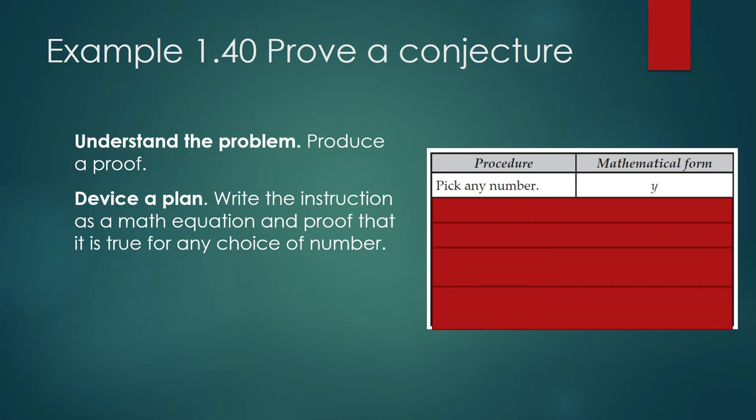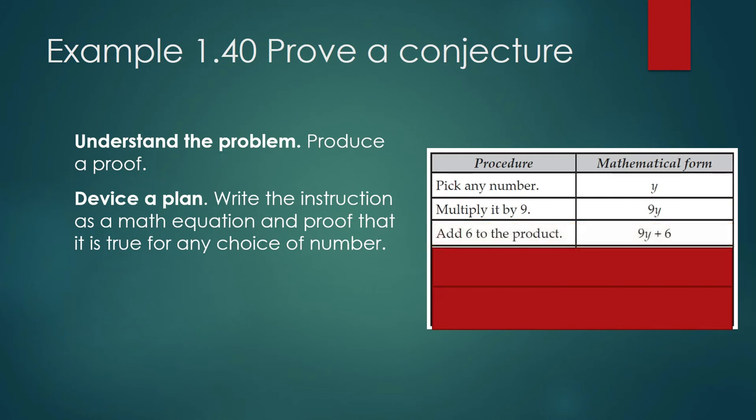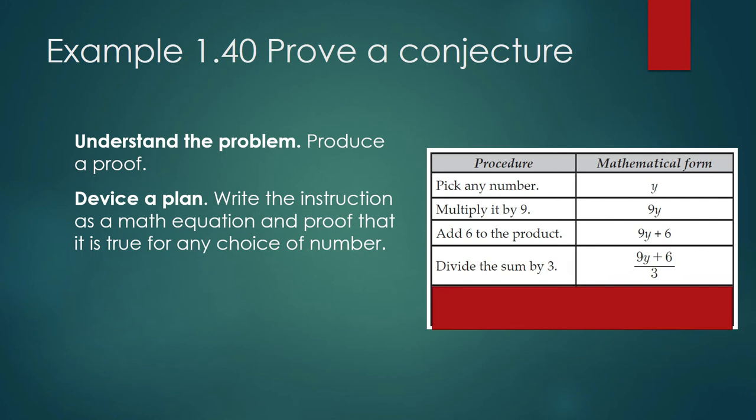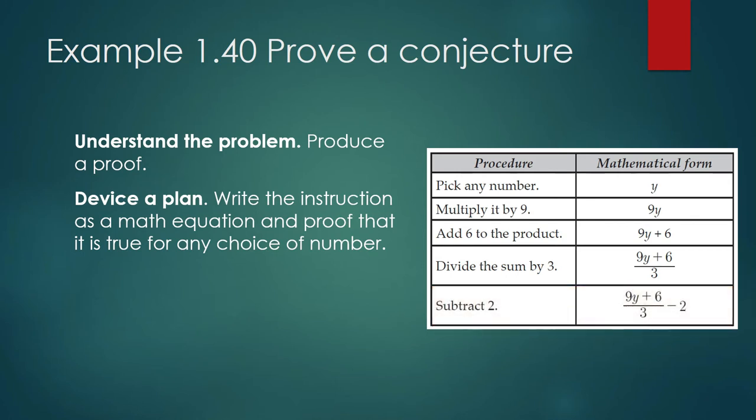The instruction was pick any number. Y is going to be the variable name for that number. Multiply it by 9, that's 9 times y. Add 6 to the product, that's 9y plus 6. Divide the sum by 3, that's 9y plus 6 divided by 3, and let us subtract 2: (9y + 6)/3 - 2. This process, this is the final form of our process that ought to give 3 times y. Given y, applying this math operations will give you 3 times y. Our plan is to prove this equation, that this equation is true for any choice of y.